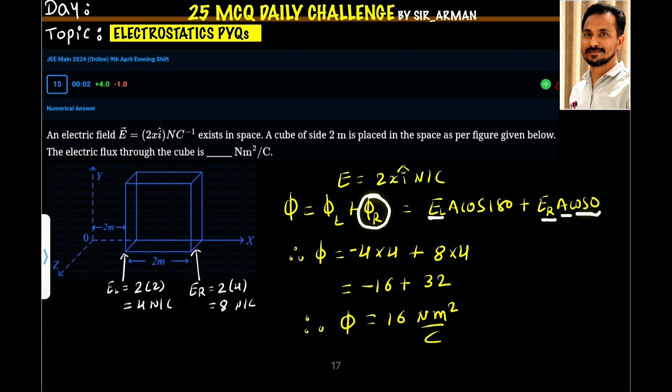Now, EL is 4, area is 4—or 2 into 2, it's a cube, so it becomes 4. So 4 into 4 is 16, but minus 16. And for the right side, the electric field is 8 and area is the same, that is 4. So 8 times 4 is 32. Therefore, minus 16 plus 32 equals 16 Newton meter square per Coulomb.